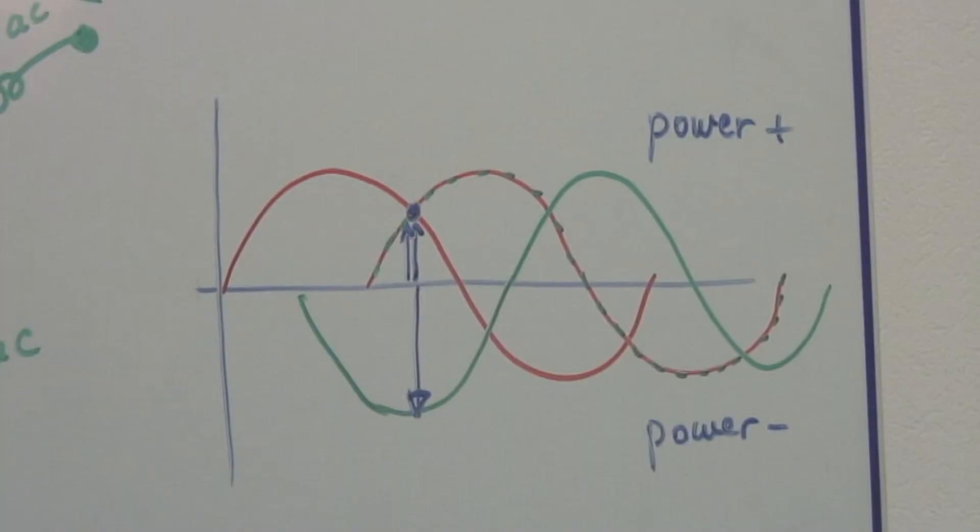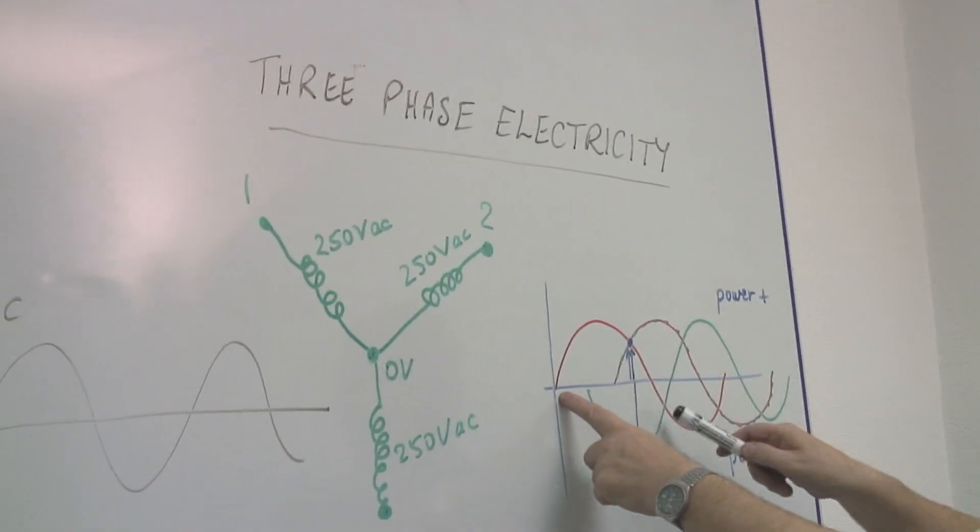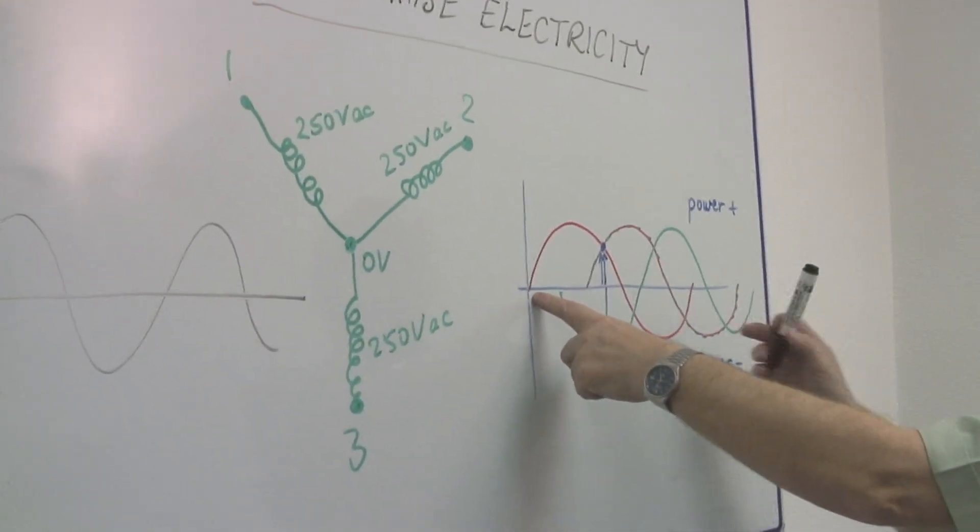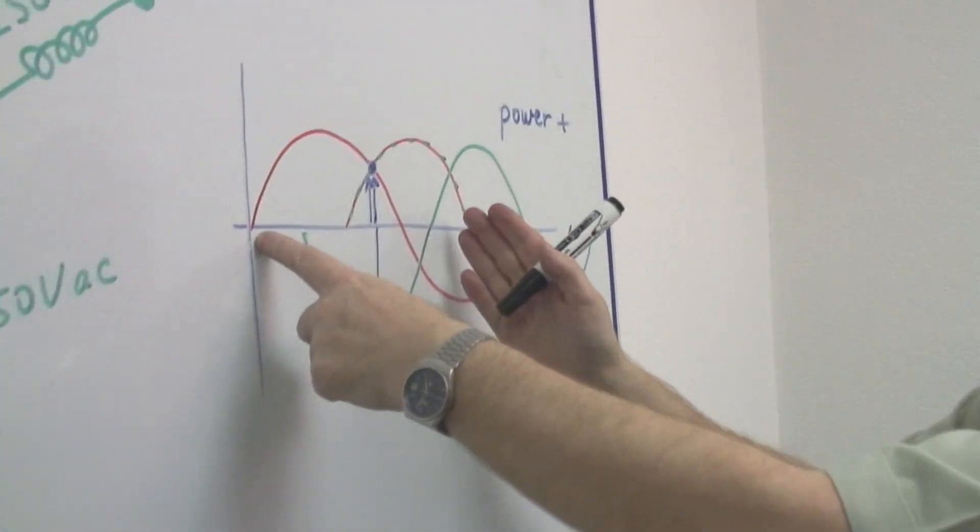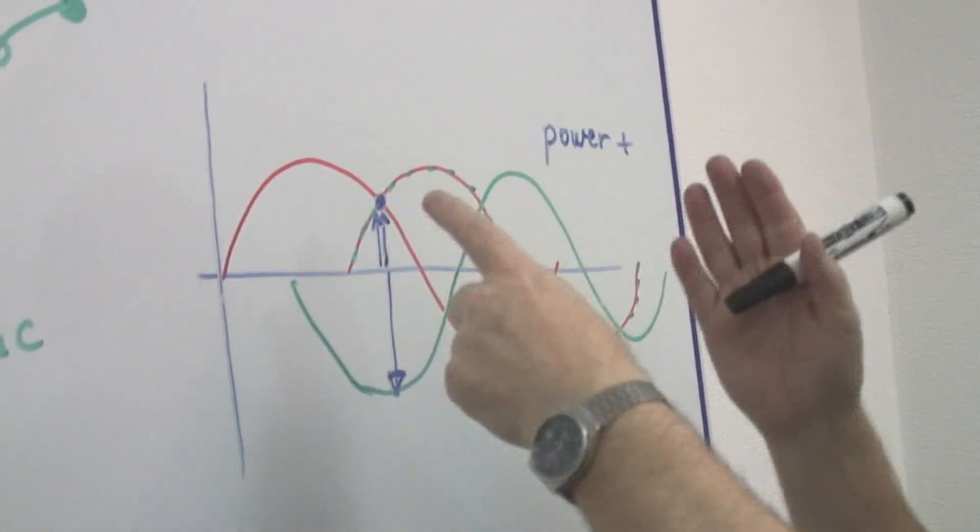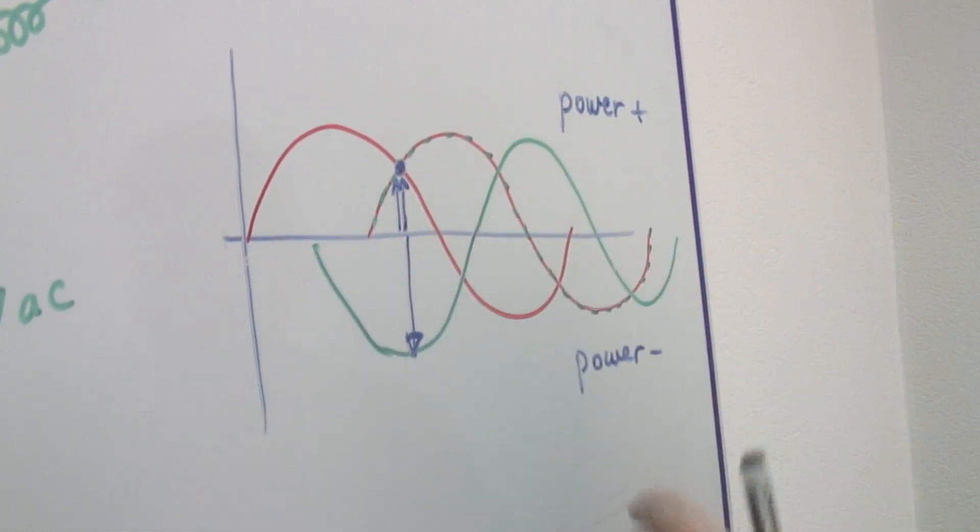When we use the word phase, we mean time. And the time interval is one-third of a complete cycle. And each starts a third of a cycle later. And therefore, the balance is maintained.